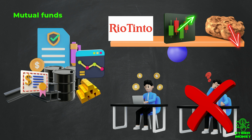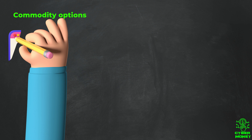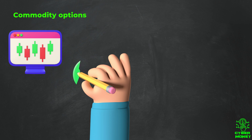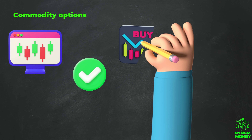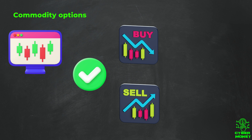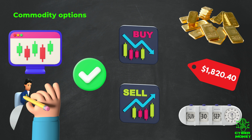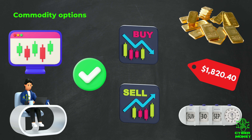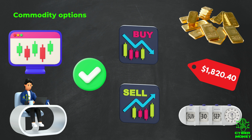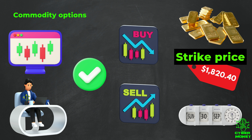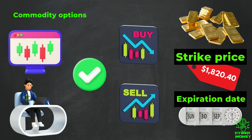Investing in commodity mutual funds allows for exposure to the commodity market without navigating the complexities of purchasing physical commodities or other instruments like futures or options. Even if some underlying commodities did not perform well, the mutual fund as a whole can still yield positive returns. Commodity options trading is another way to invest in commodities, where the buyer of the option has the right — but not the obligation — to buy or sell a specific amount of a commodity at a specific price and at a specific time in the future.